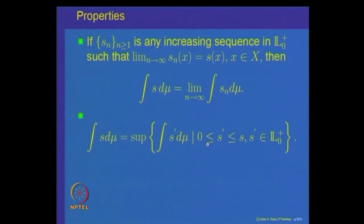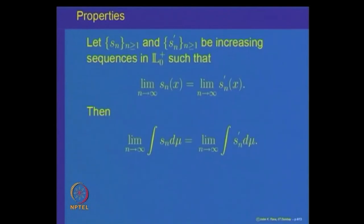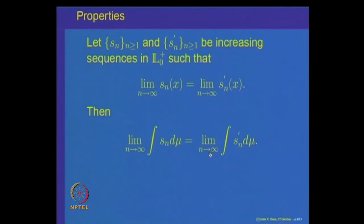Next, let us observe another important property: suppose S_n and S_n' are two increasing sequences of non-negative simple measurable functions, both converging to the same limit — that is, limit of S_n(x) equals limit of S_n'(x). Then the claim is that the limit of integral S_n dμ must equal the limit of integral S_n' dμ. In other words, if two sequences have the same limit, their integrals converge to the same value.